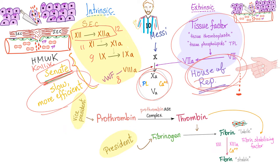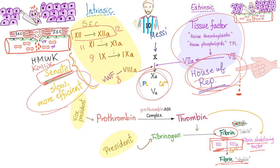The highest number was factor 12, but then we discovered factor 13 because some people, after forming fibrin, would still bleed to death. Why? Because the fibrin was not stabilized. So there is factor 13, called the fibrin-stabilizing factor. It activates fibrin into cross-linked fibrin — that's how you stabilize fibrin, through cross-linking.